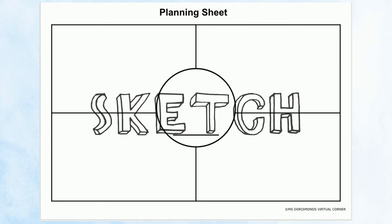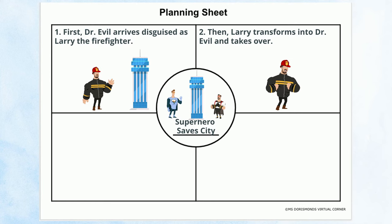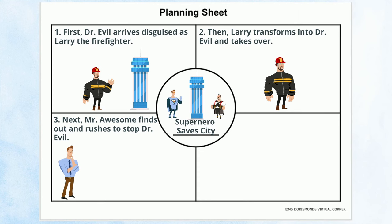The first thing I will write about is Dr. Ice arriving at Megacropolis Tower, disguised as Larry the Firefighter. Then he transforms into Dr. Ice and takes over Megacropolis Tower. Next, Mr. Awesome finds out about the takeover and Dr. Ice's plans to destroy the city with an ice rocket. He rushes to the top of the tower to stop him.